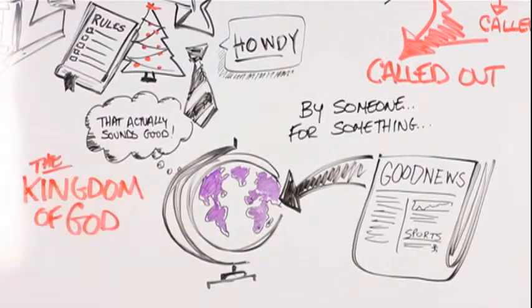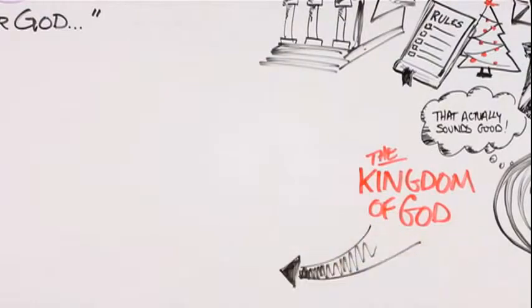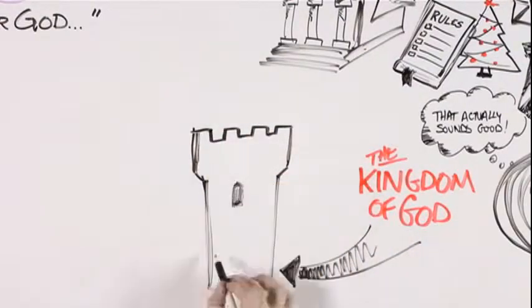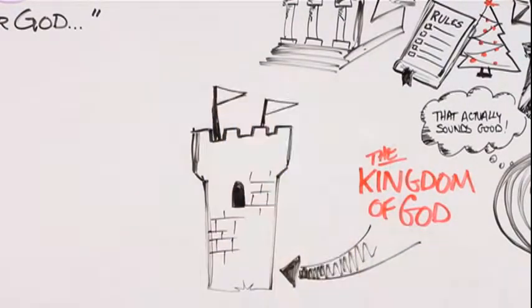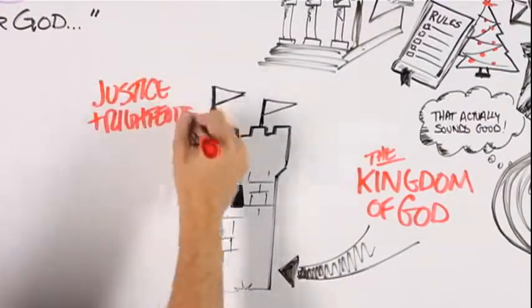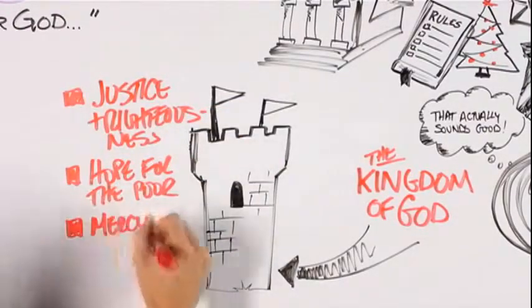When Jesus talked about the gospel, it was always in conjunction with something else, something called the kingdom of God. And in the kingdom of God, God's purposes are made apparent. There's justice and righteousness. There's hope for the poor and for the oppressed.